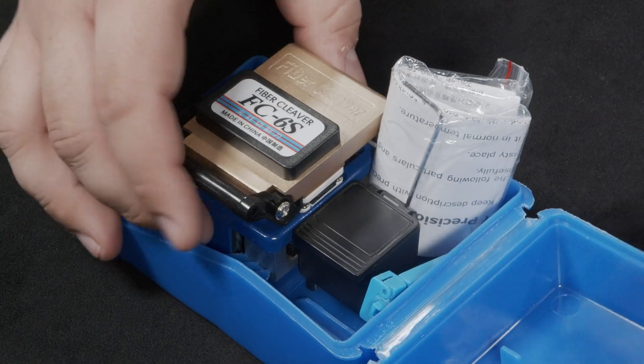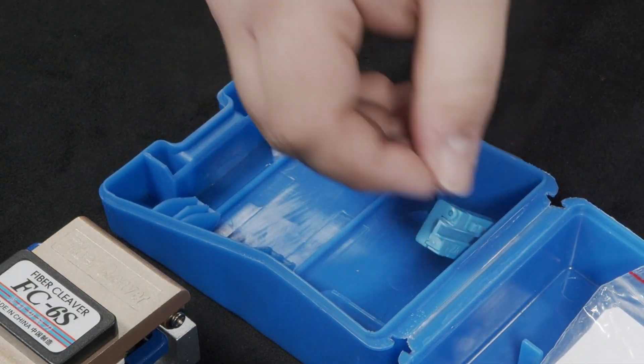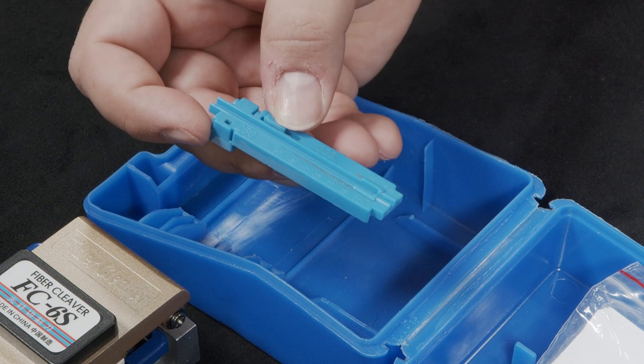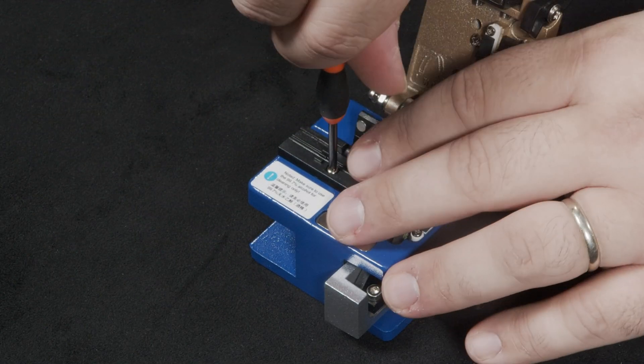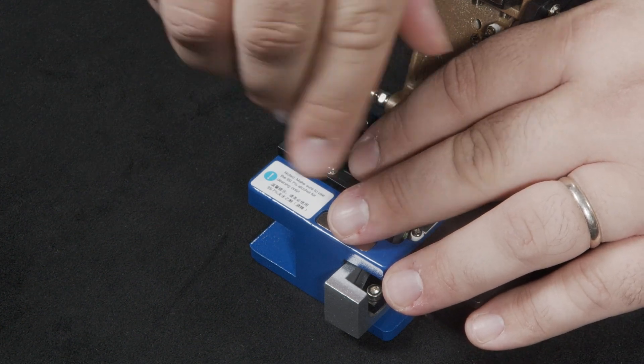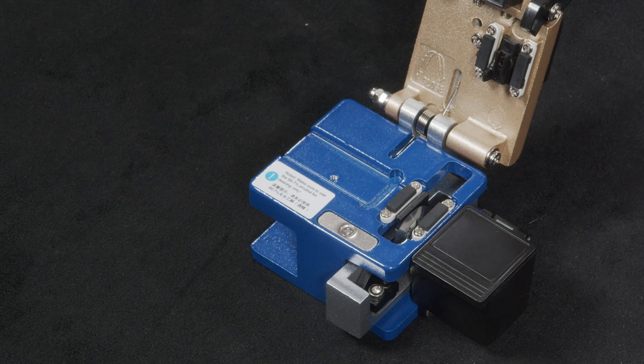Included with the fiber cleaver is a blue adjustable fiber guide. In order to use this guide you will first need to use a precision Phillips head screwdriver to remove the black guide that is shipped with the fiber cleaver. Remove this screw, then remove the guide.